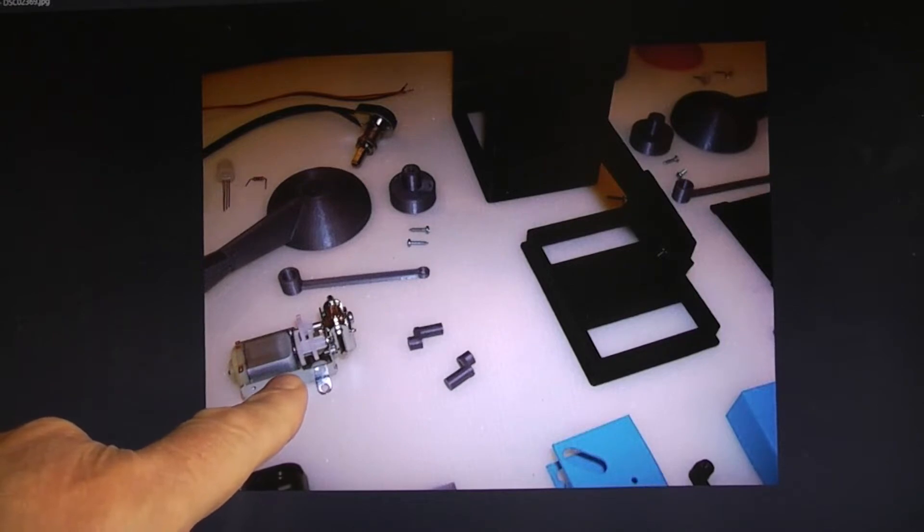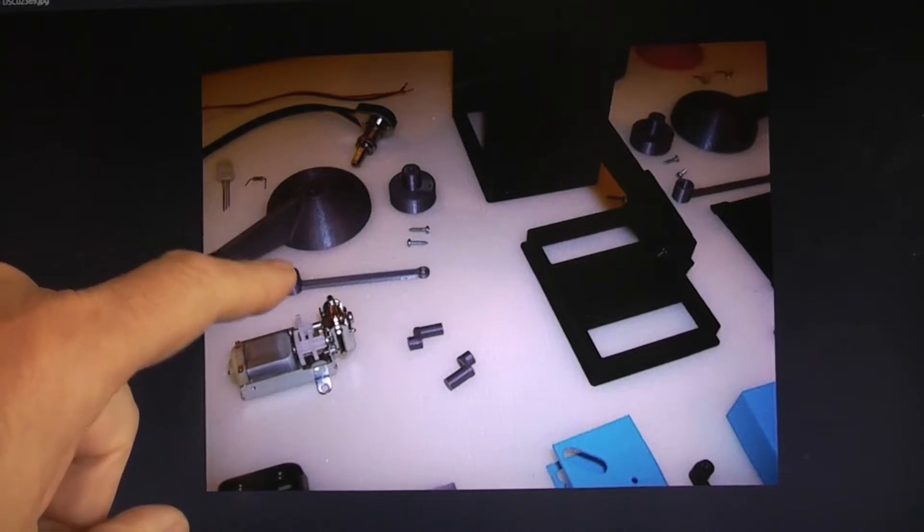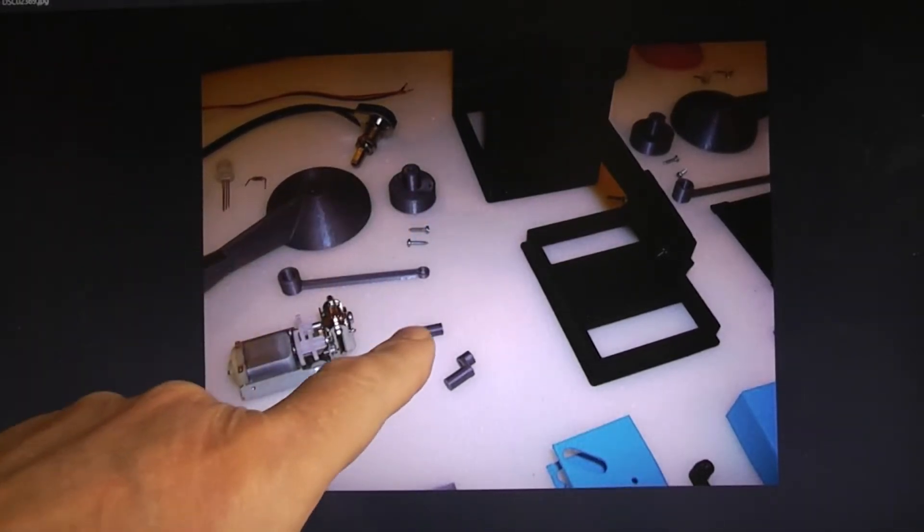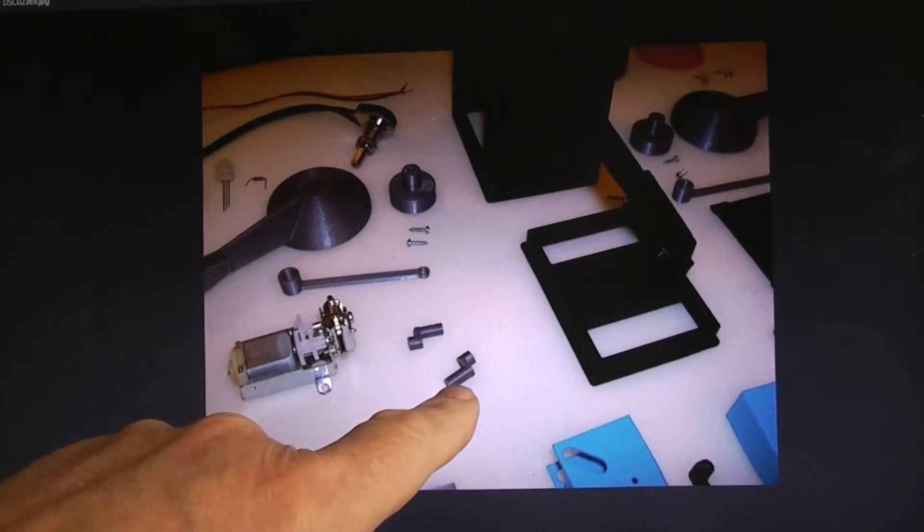This is the universal Tamiya gearbox that we're going to be using. Here's part of an arm, some arm linkage, part of the arm crank. These are the cranks for the walking, for the feet and the arm movement.